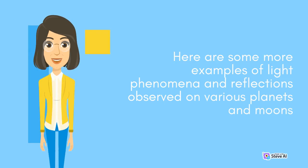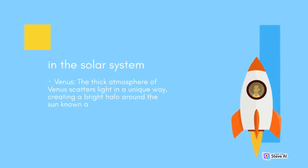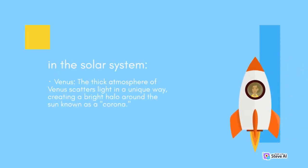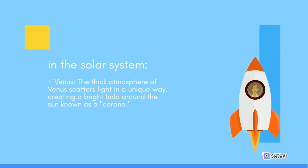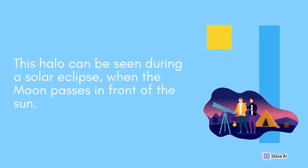Here are some more examples of light phenomena and reflections observed on various planets and moons in the solar system. Venus: the thick atmosphere of Venus scatters light in a unique way, creating a bright halo around the Sun known as a corona. This halo can be seen during a solar eclipse, when the Moon passes in front of the Sun.